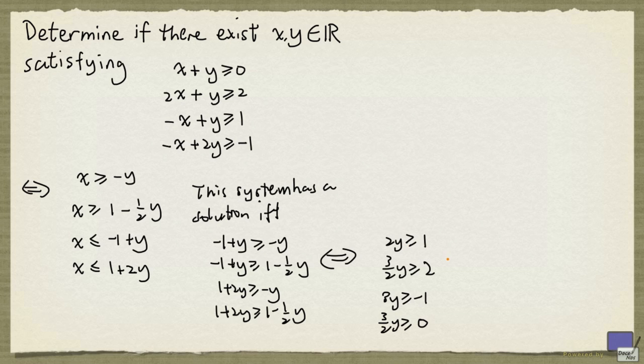And we can normalize the coefficients of y. That will give us y at least 1 half, y at least 4 thirds, y at least minus 1 over 3, and y at least 0.